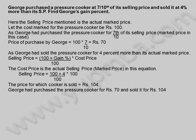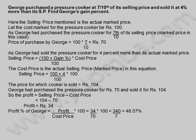George had purchased the pressure cooker for 70 rupees and sold it for 104 rupees. So the profit is equal to selling price minus cost price, which is 104 minus 70. Profit is equal to 34 rupees. Profit percentage of George is equal to profit divided by cost price into 100, which is 34 by 70 into 100, equal to 340 by 7, equal to 48.57 percentage. Profit percentage earned by George is 48.57 percentage.